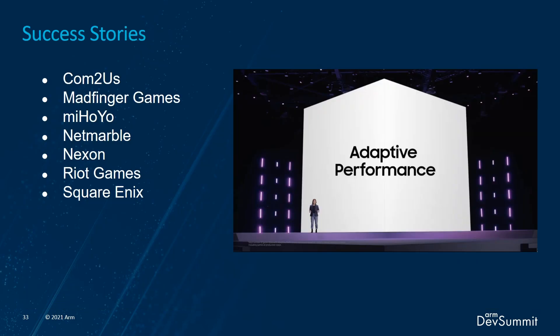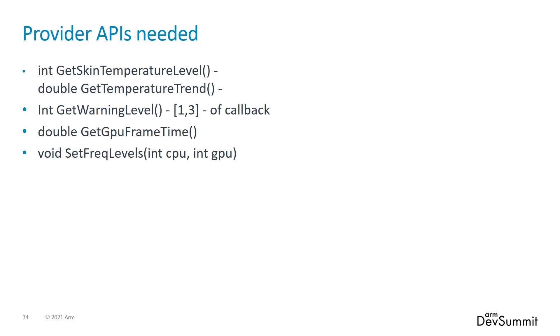Adaptive Performance is used by a significant number of games, such as Call of Duty Mobile, League of Legends: Wild Rift, Shadowgun, Seven Deadly Sins, Genshin Impact, and many more, showing in many cases how successful our tools for performance optimization are. If you run your own SoC or simply want to create your own data provider to use Adaptive Performance features, there is only a minimum set of APIs required: a temperature level and/or temperature trend, warning levels to estimate throttling if not supplied directly, a GPU frame time to predict bottlenecks properly, and an interface to set CPU and GPU frequency.